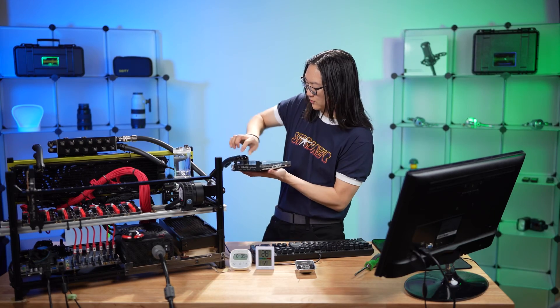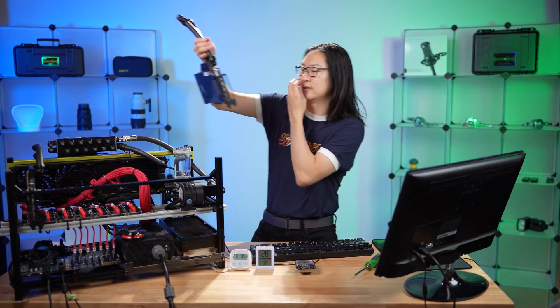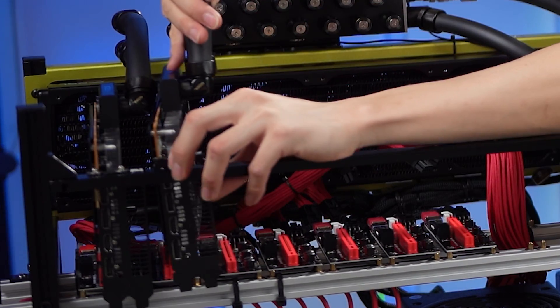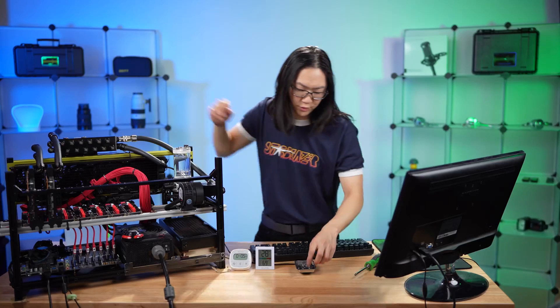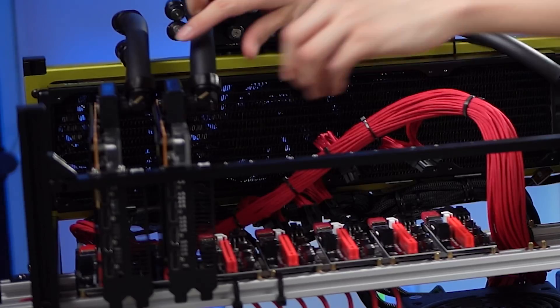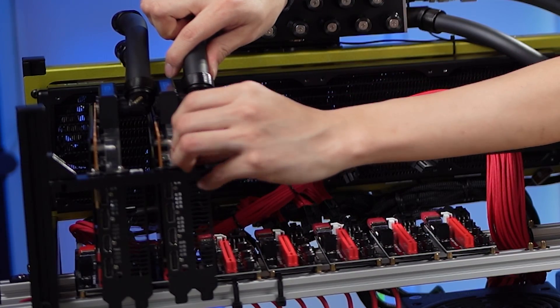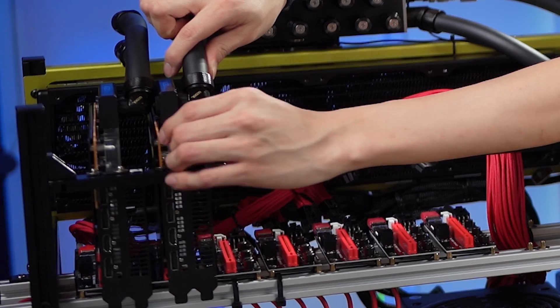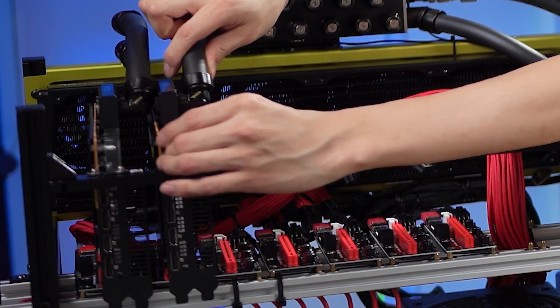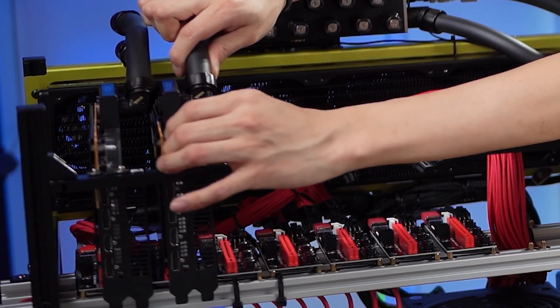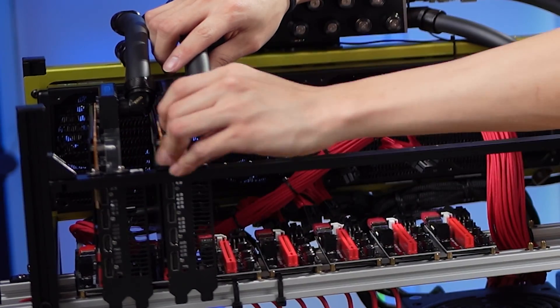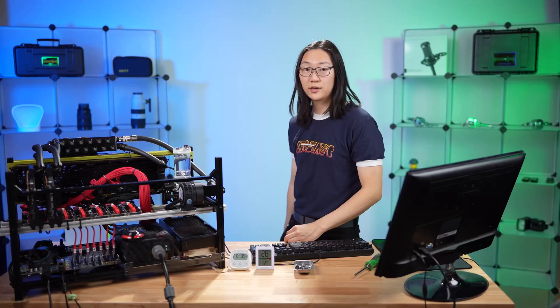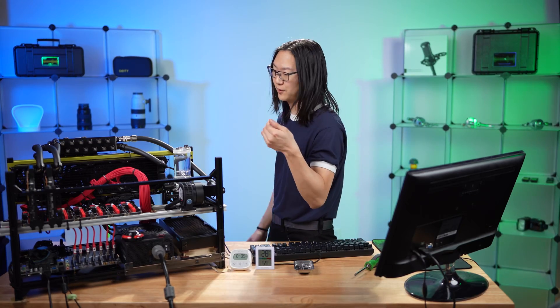All right, I got GPU number two. Make sure the fittings are tight. I'm just going to put the rest of these in. GPU two takes 1032 threads. Sorry, 632. 1032 is a standard size and a place I work at, so I'm so used to them.